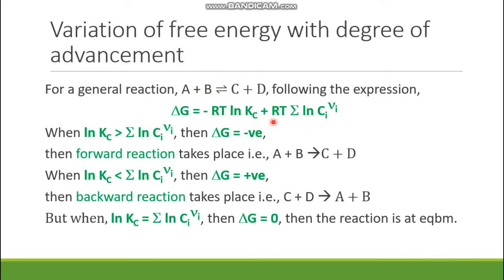Now we have to understand this equation clearly. What is the difference between Kc and this summation term? In the expression of Kc, the numerator has the corresponding concentrations of the products and the denominator has the corresponding concentrations of the reactants, with stoichiometric coefficients as powers. These concentrations are the equilibrium concentrations. If these concentrations deviate from equilibrium — suppose at the start the reactant concentrations are much higher than equilibrium and the product concentrations are much lower — then the system is not yet at equilibrium.